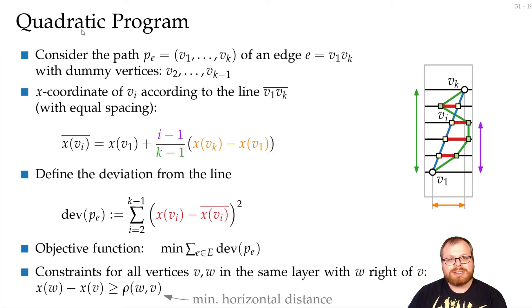And the reason this is called a quadratic program is because the objective function depends on some terms quadratic in the variables. In the linear program, we only had linear in the variables. Here we have quadratic. So it's a quadratic program.